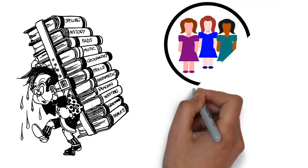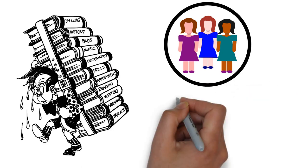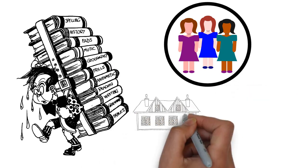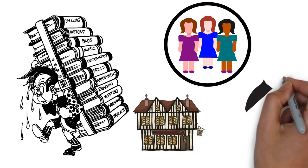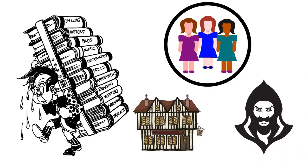Mephistopheles takes Faust to a tavern and explains these men have found their true joy, but Faust is not convinced. He plays tricks on the men and when they come after Mephistopheles, they escape easily.